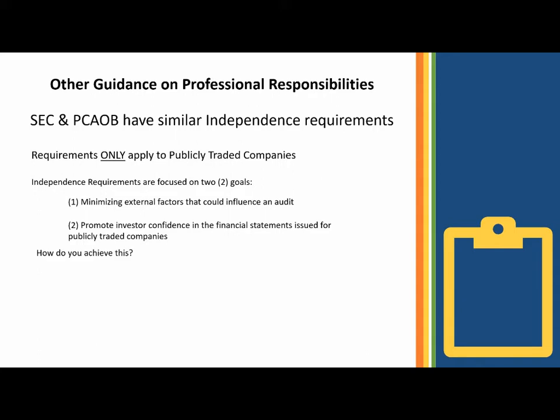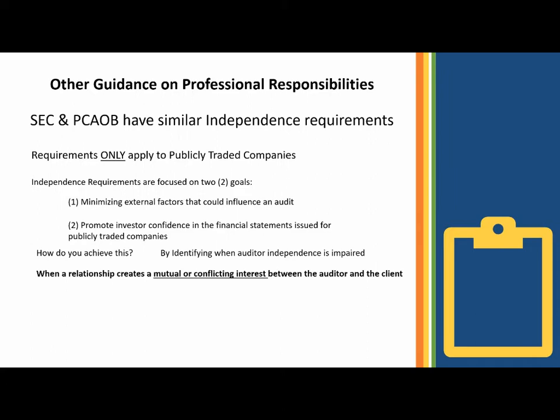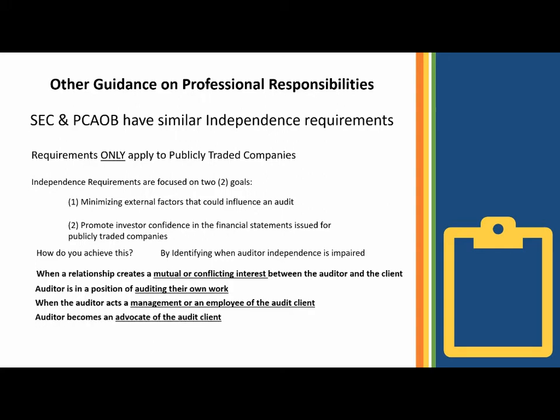So how do you achieve this? By identifying when the auditor's independence is impaired. Independence is impaired when a relationship creates a mutual or conflicting interest between the auditor and the client; when the auditor is in a position of auditing their own work, or that self-review threat; when the auditor acts as management or an employee of the audit client, similar to the management participation threat; and when the auditor becomes an advocate of the audit client, the advocacy threat. Very similar threats to what we saw in the AICPA discussion.